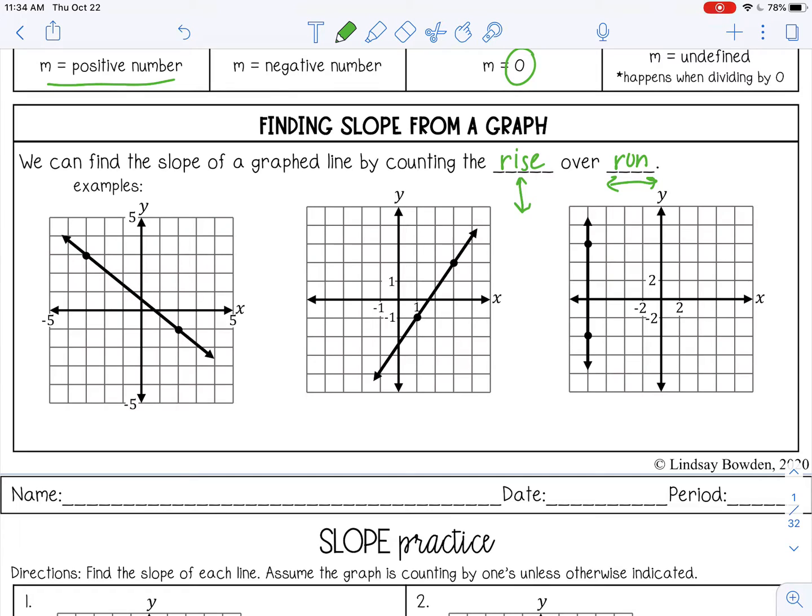So the first thing I always do is if I'm looking at a line, I determine, okay, is this a positive or a negative slope or is it something else? So in that first example, I can look at that graph and tell it's falling from left to right. Remember, you read a graph like you read a book, left to right. So if it's falling from left to right, that means my slope is going to be negative.